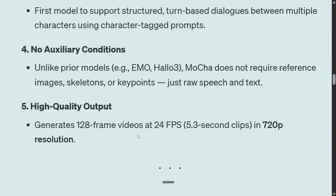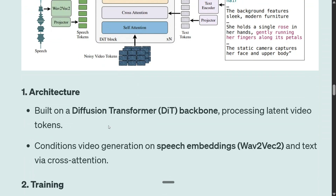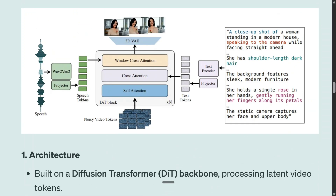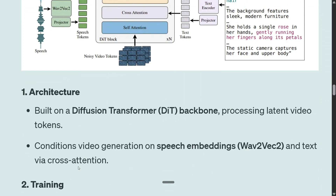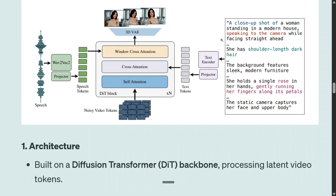Looking at the architecture diagram shared by the team: MOCHA uses a DiT (Diffusion Transformer) architecture, as used by most video generation models now. Speech embeddings are generated using Wave2Vec2, then window cross-attention is applied. Multiple different types of attention are used to generate a 3D VAE, which is a sort of auto-encoder. On the other side, text describing the scene - for example 'a close shot of a woman standing in a modern house' - is processed and merged with the speech through the attention block of the DiT to generate the final video.